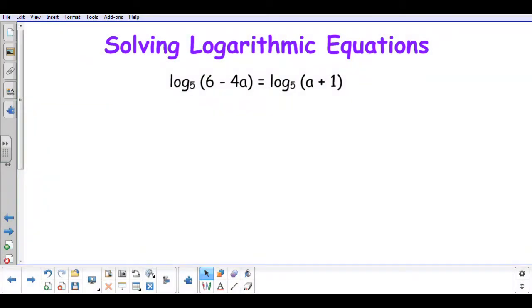The last type of logarithm equation that we are going to see is when we have a log on both sides of our equal sign. When that happens, the logs actually can just cancel each other out.